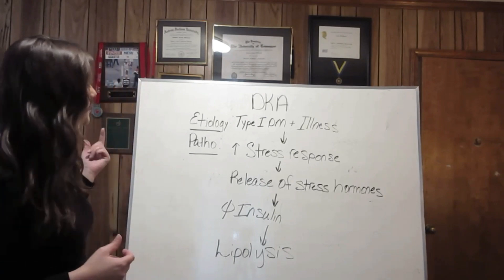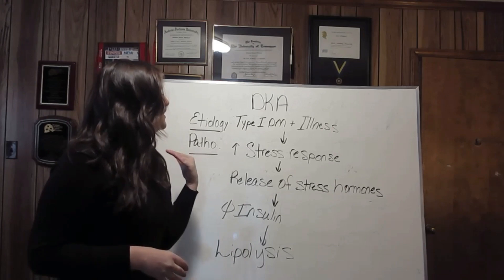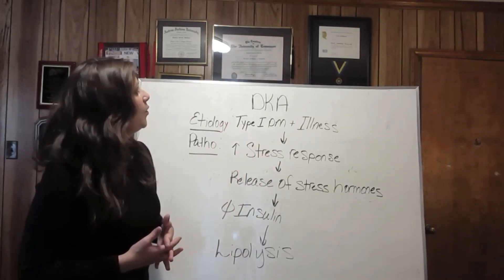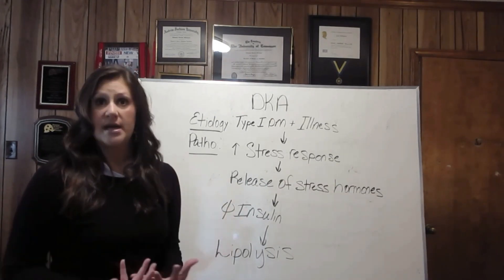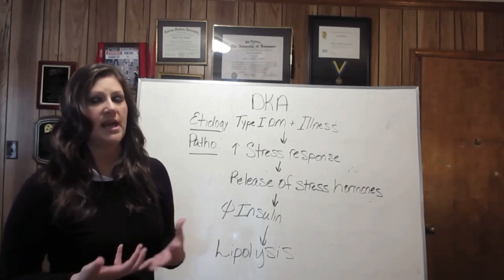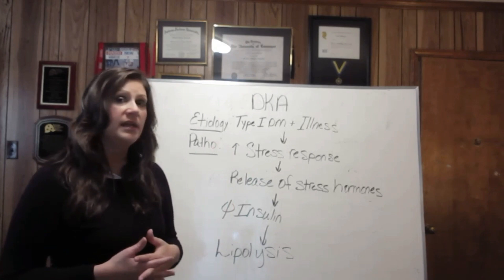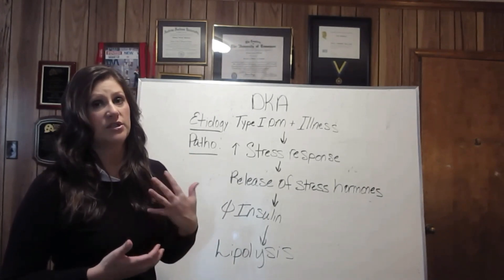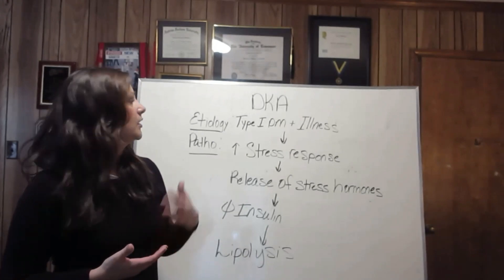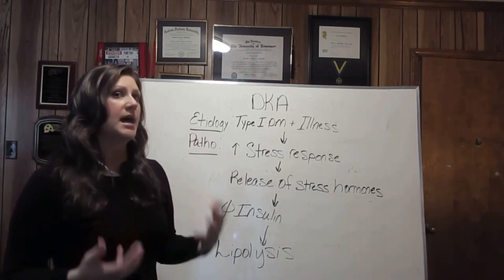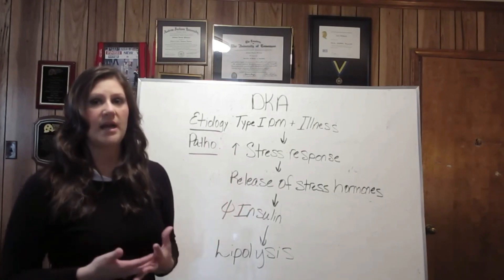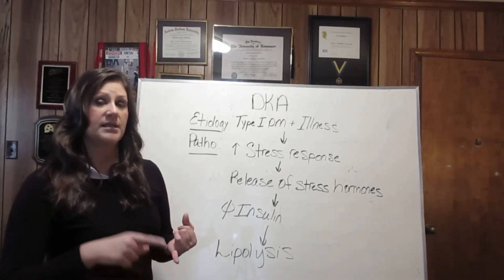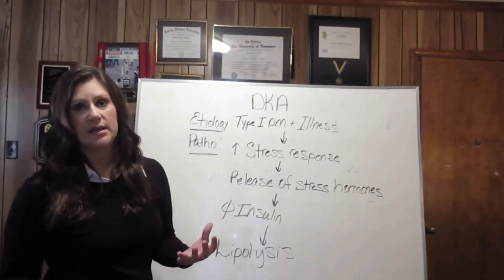Let's start! DKA is Diabetic Ketoacidosis. DKA is a complication of type 1 diabetes mellitus. When a type 1 diabetic gets stressed, that can throw them into DKA. DKA is primarily a complication of type 1 diabetes. Type 2 diabetic patients get hyperglycemic-hyperosmolar syndrome, which is a different topic for a different video.